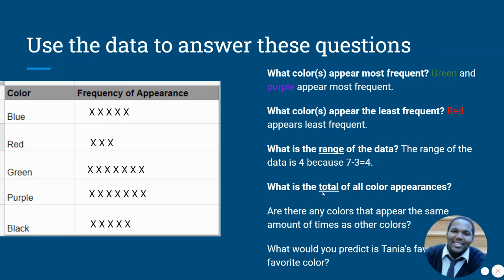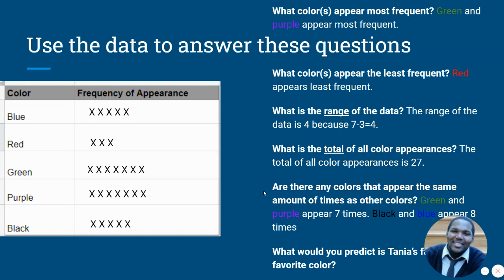What is the total of all color appearances? This is a lot of information we're getting out of here, isn't it? So if we wanted the total, we could just count each appearance one by one and we get what? That's right. We get 27.